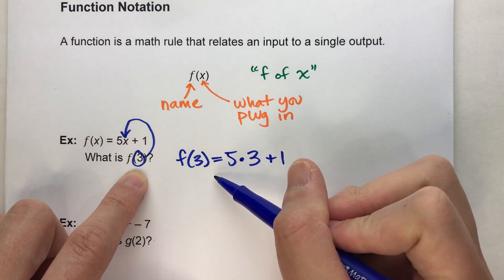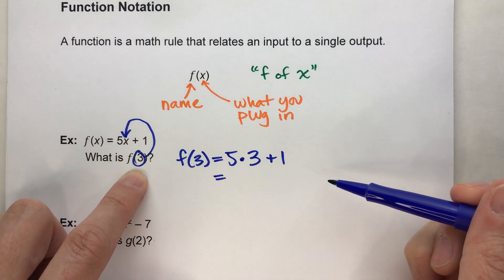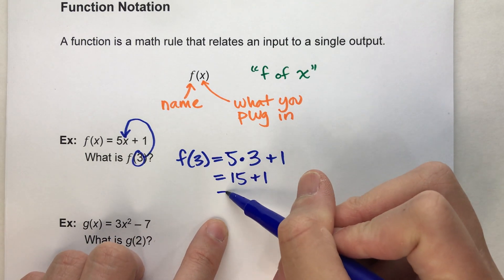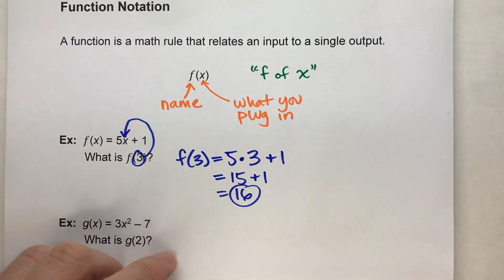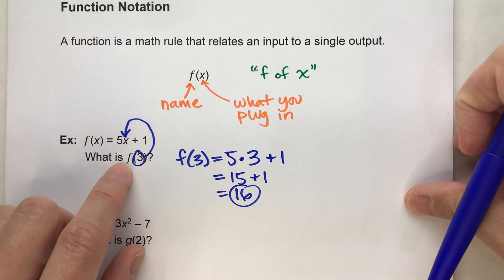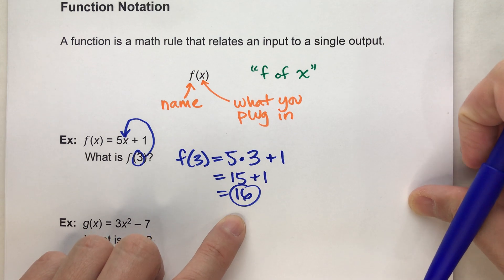And you've probably done stuff like this before, it just didn't look like this. 5 times 3 is 15, plus 1 is 16 and guess what, we found the answer. For the function f, f of 3 would equal 16.